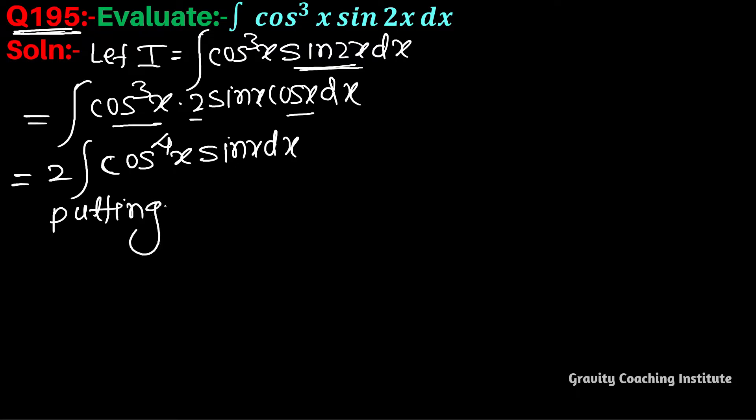cosx equal to t. Now differentiate with respect to t: cosx differentiation is minus sinx, so sinx dx equals minus dt.